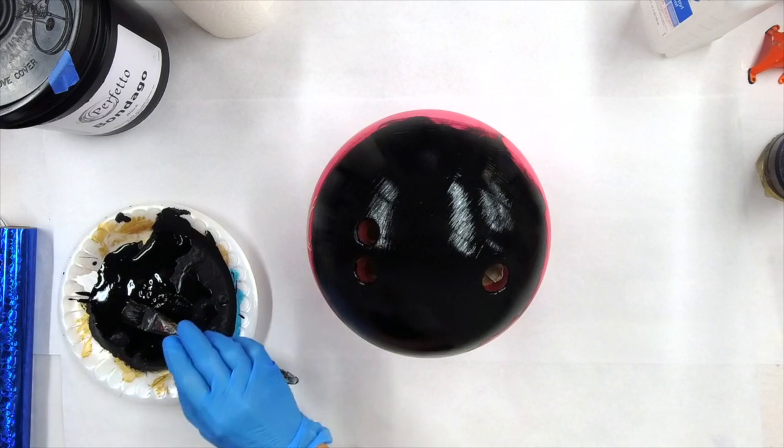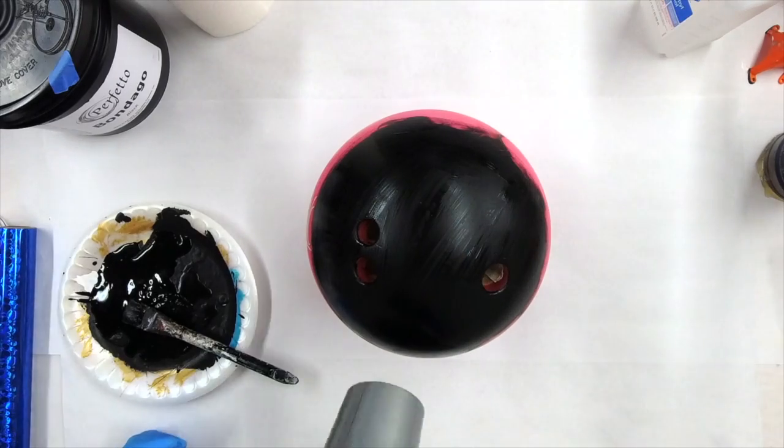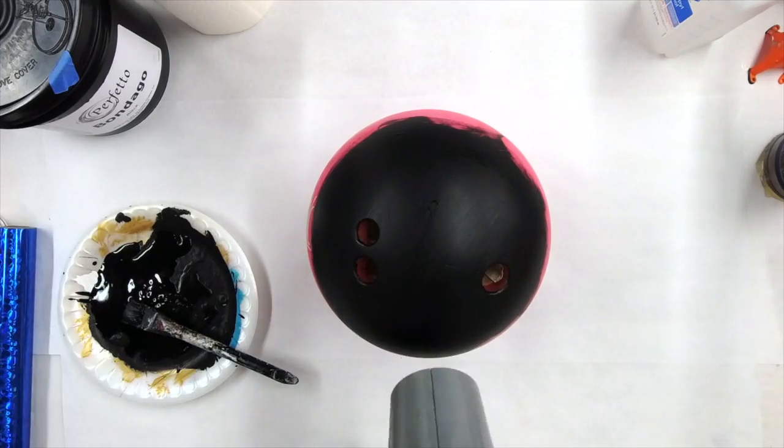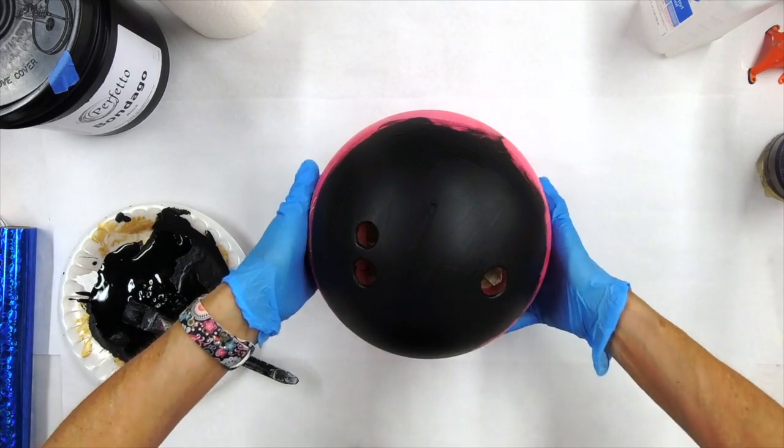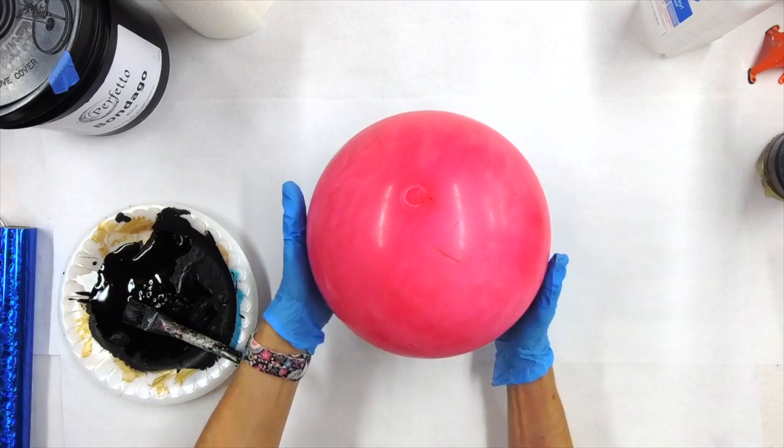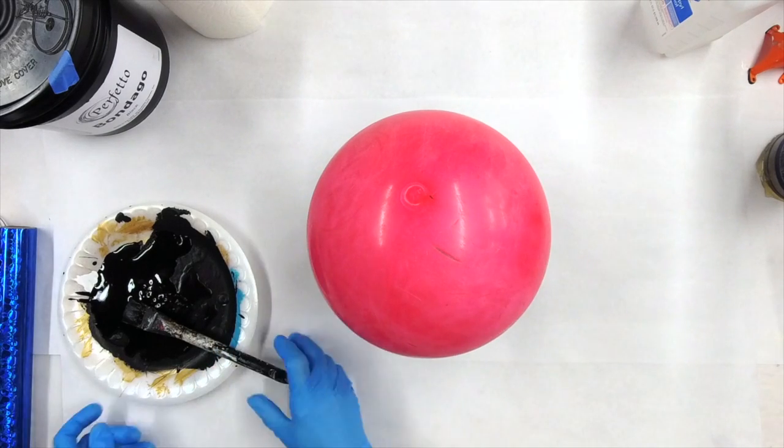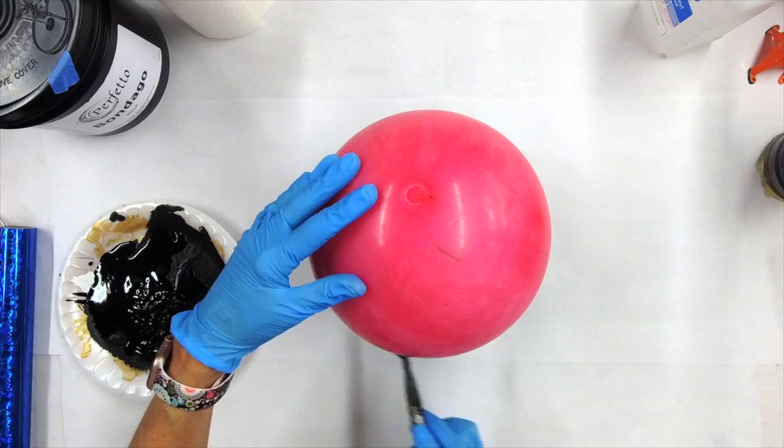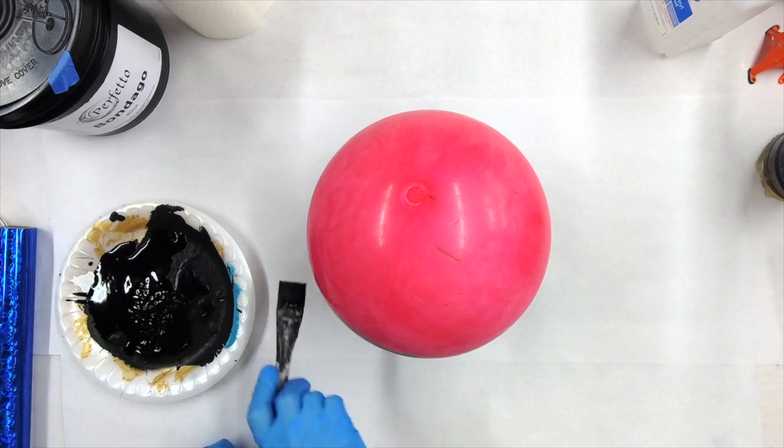So this bottom section is on top of the tape. So we'll blow dry it real quick. And now we're going to flip this over and try to get that straight down. So now that we can paint the whole rest of the bowling ball.